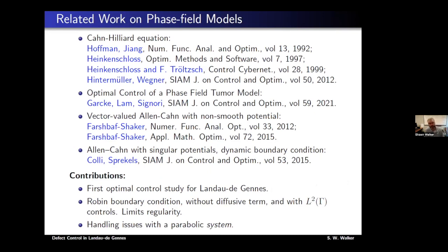For related work, many people have done optimal control of phase-field problems — Cahn-Hilliard, phase-field tumor models, vector-valued Allen-Cahn, Allen-Cahn with singular potentials. What we've done is the first optimal control study for Landau-deGennes with the purpose of controlling defects, using Robin boundary conditions without a diffusive term. This made things more difficult because we only have L2 controls, which limits regularity of the solution and prevents taking advantage of certain Sobolev embeddings. There are also issues with handling a tensor-valued parabolic system rather than a scalar one.